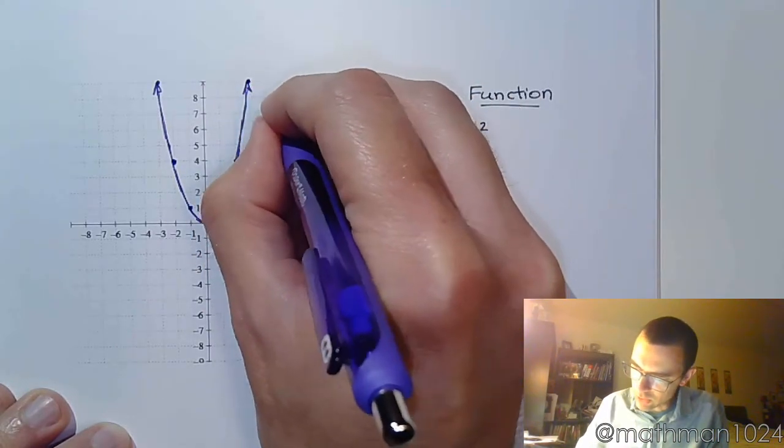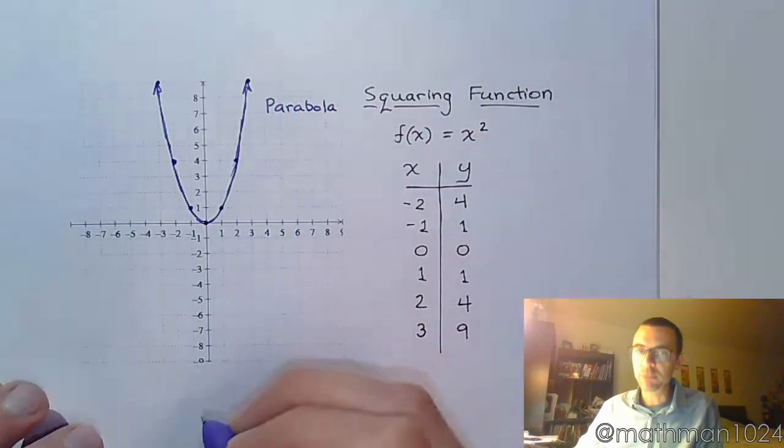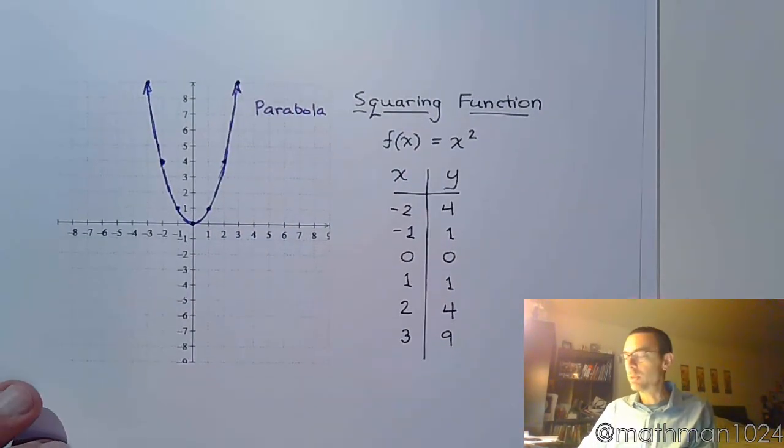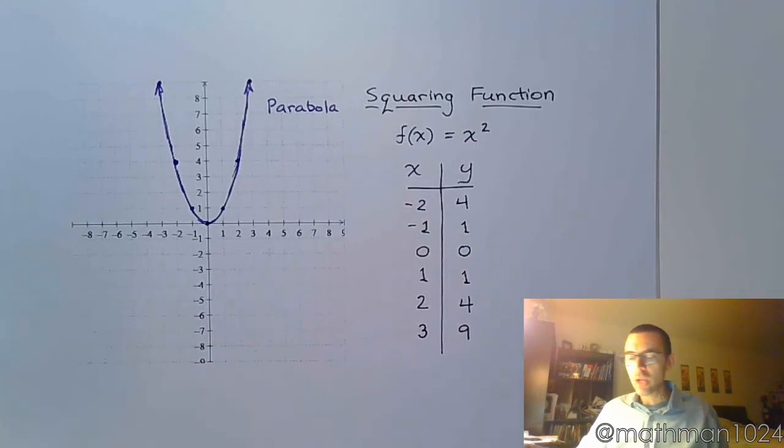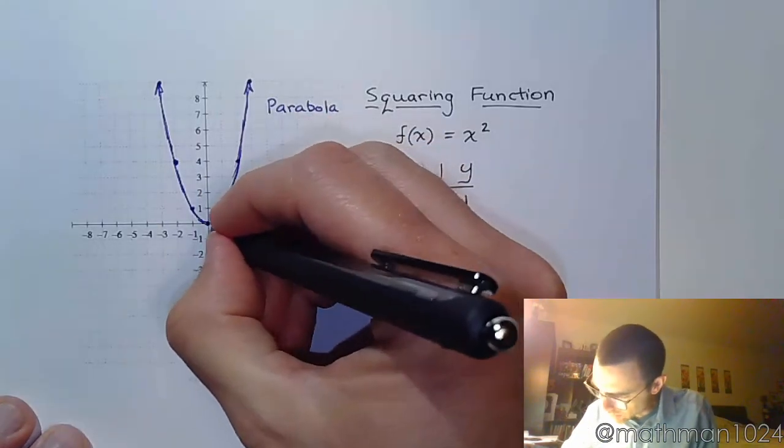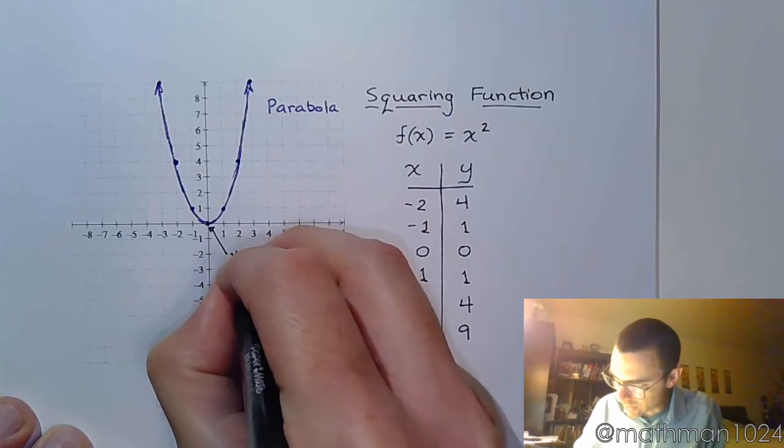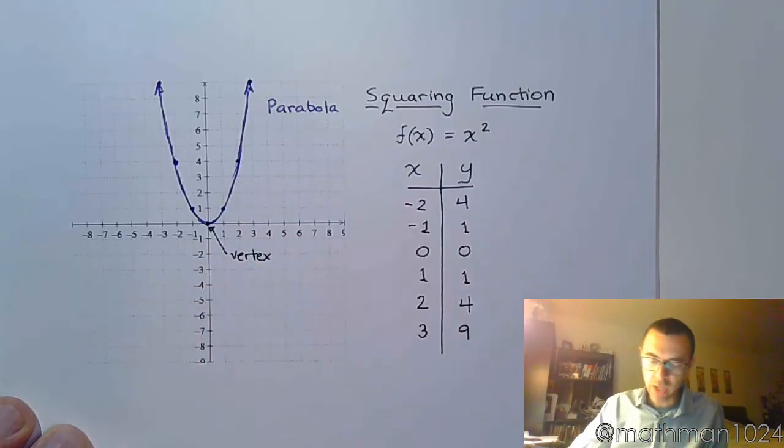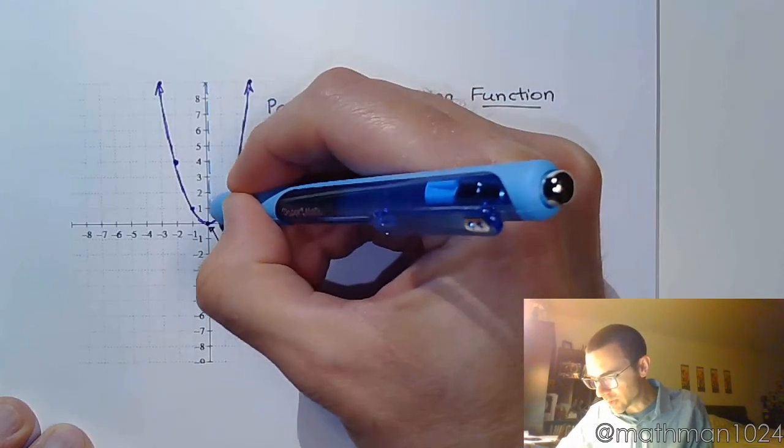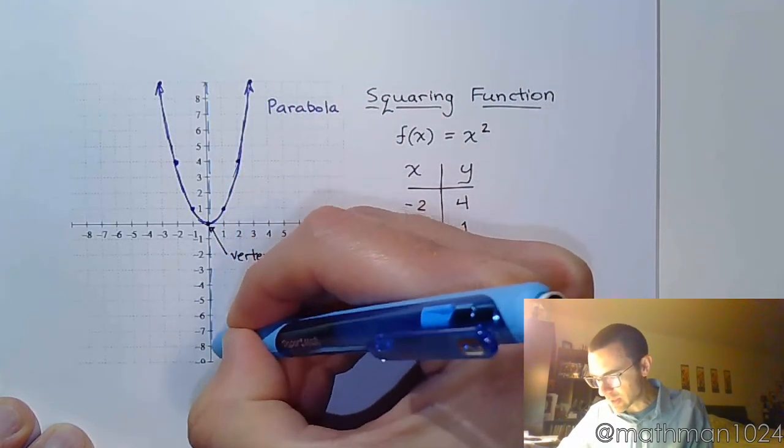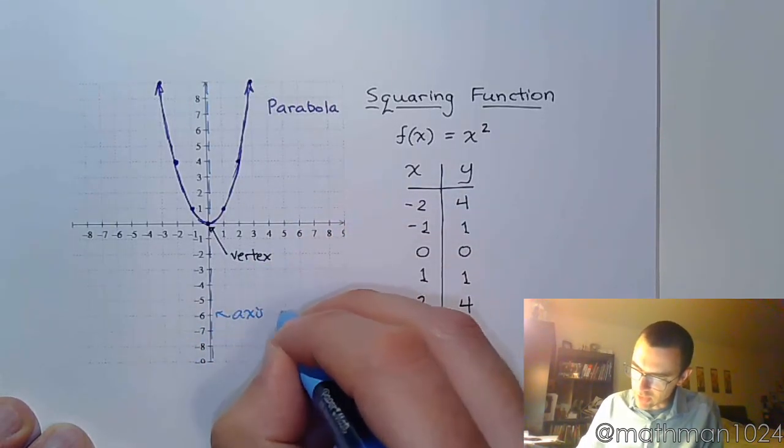This shape is called a parabola. Please do not call it parabola because that is incredibly wrong. It is a parabola. So, some key points here to note is that right here where it hits that origin, this is called the vertex. And you'll also notice there is this line of symmetry that cuts right through the middle of this. And so, this is what we call an axis of symmetry.